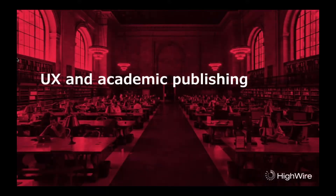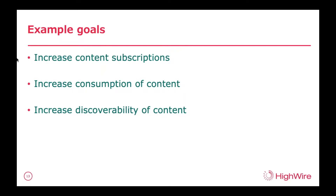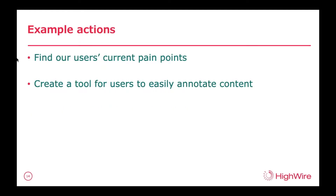Let's talk a bit about UX and academic publishing. In UX, it's important to start with a clear goal in mind as a reference point so you have a clear vision of what you're after. Some example goals would be increased content subscriptions, increased consumption of content, and increased discoverability of content. From these points, you start thinking about what actions will come from this. I've got two here: the first is to find our users' current pain points, and the second, specific to the publishing industry, is to create a tool for users to easily annotate content.